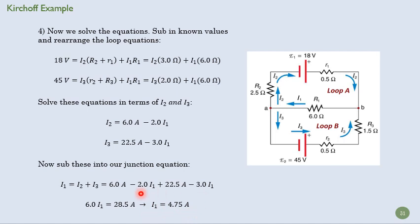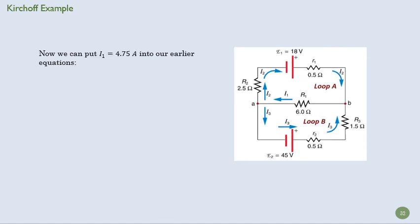And we can solve that for I1. So now we know that we were right about the direction of our current here, and that it's 4.75 amps. Now we can take this guy and put it in these and solve for I2 and I3. So we take our equation here, put in our known value for I1 rather, and we get a solution for I2. Now I2 says negative 3.5. This is here. We assumed it was going to go this way. It turns out it doesn't.